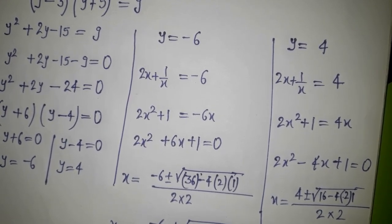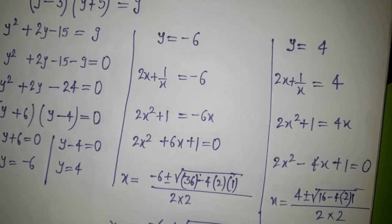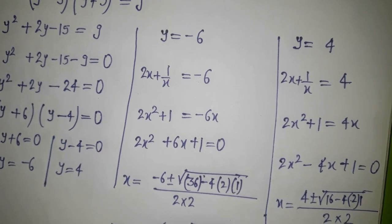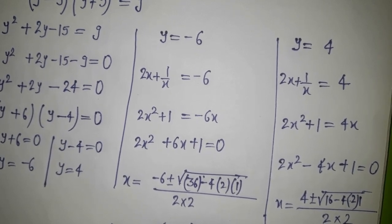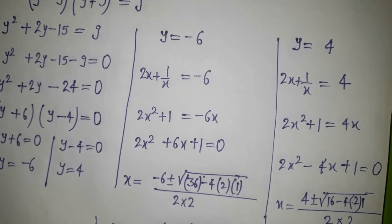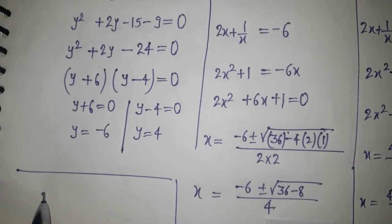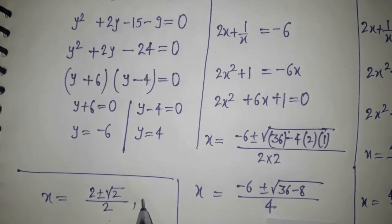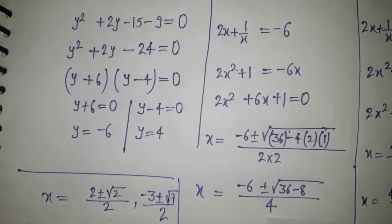Simplifying: x = (4 ± √8) / 4. Since √8 = 2√2, taking 2 common and cancelling gives x = (2 ± √2) / 2. So there are four values of x in total that satisfy the original equation: x = (2 ± √2) / 2 and x = (-3 ± √7) / 2.